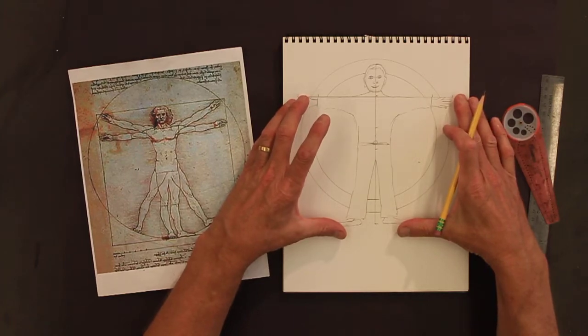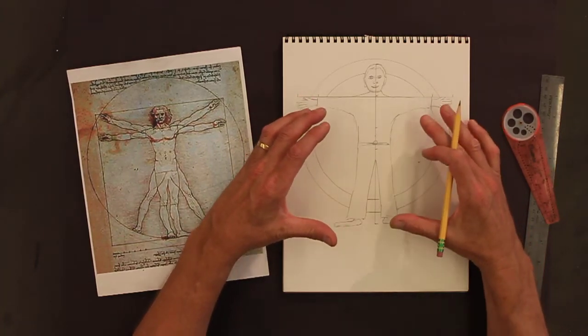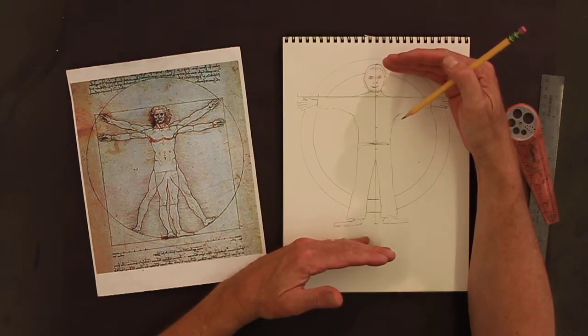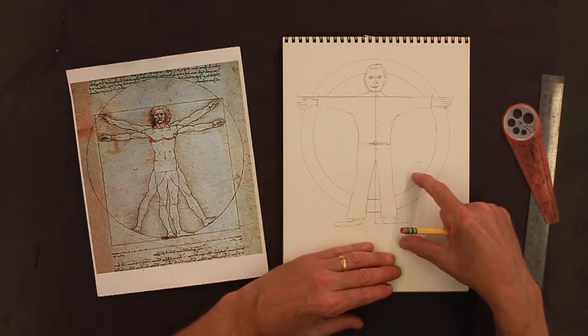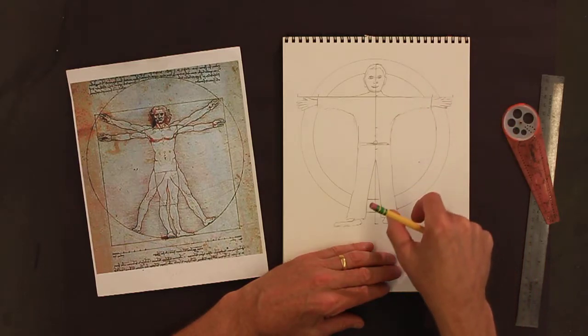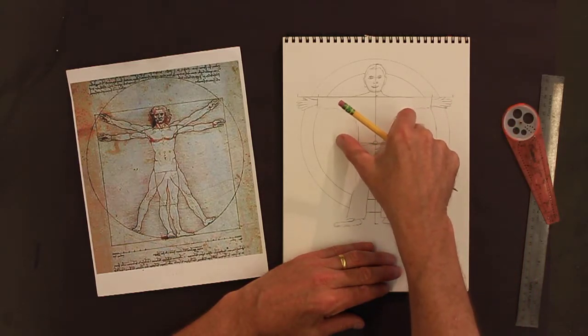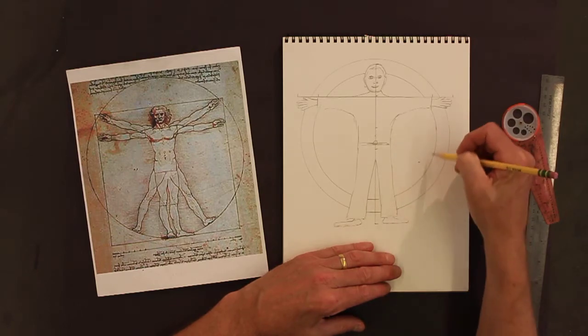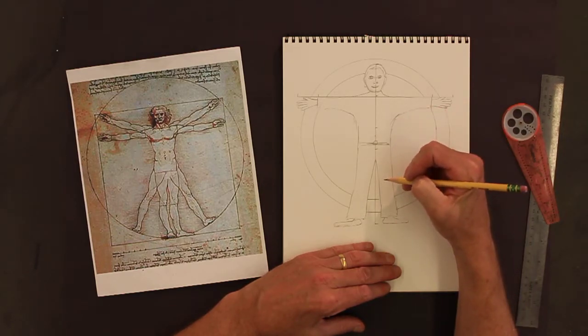To get a feel for the correct proportions of the figure. The objective of this lesson is to create a figure that's in proper proportions, so that the head is the correct size in relationship to the rest of the body. The hands and feet are the correct size in relationship to the rest of the body. All humans have basically the same universal proportions.